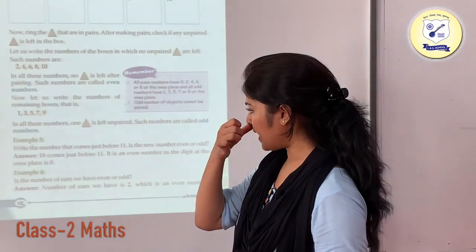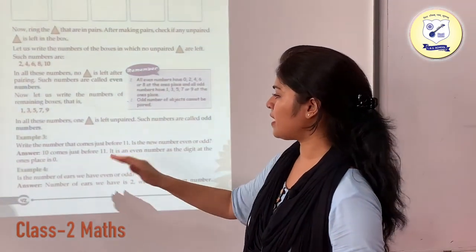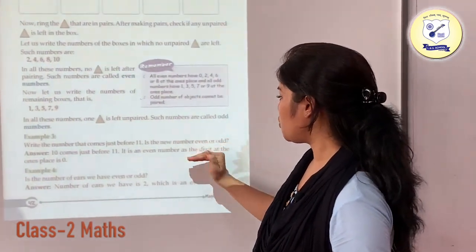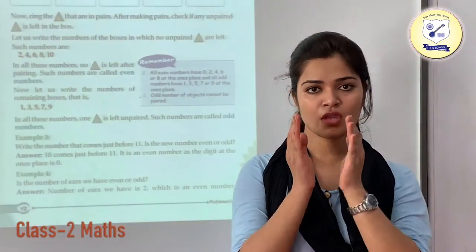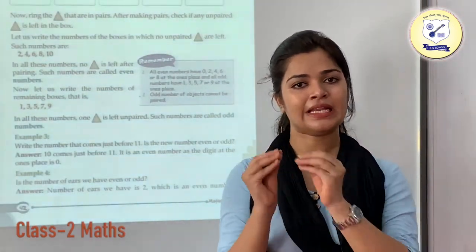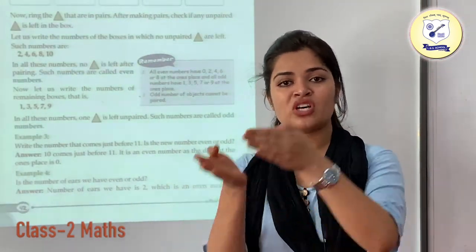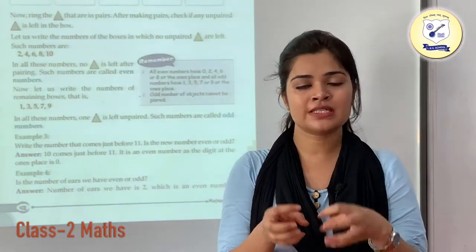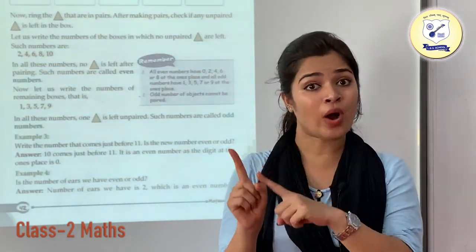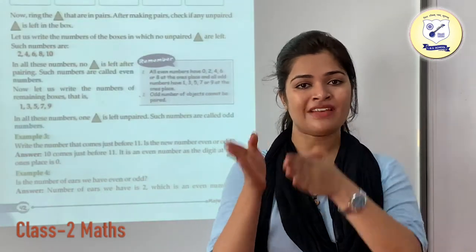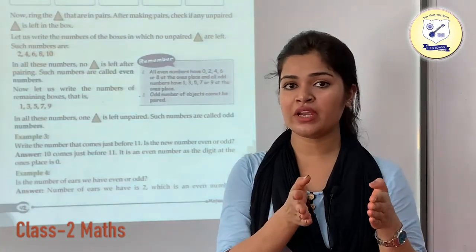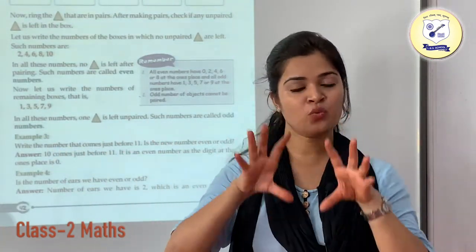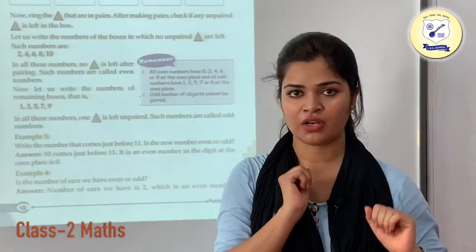Example 3: Write the number that comes just before 11. Is the new number even or odd? To find the number which comes just before, subtract 1 from it. So 11 minus 1 is going to be 10. We have 10, which comes just before 11.